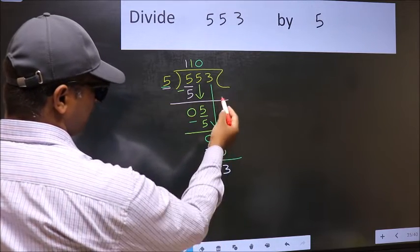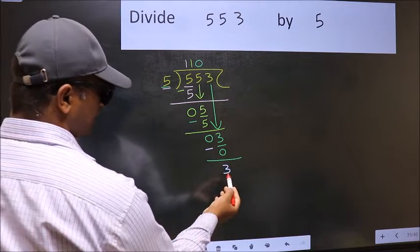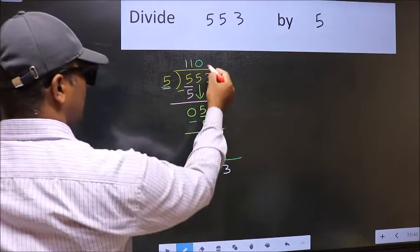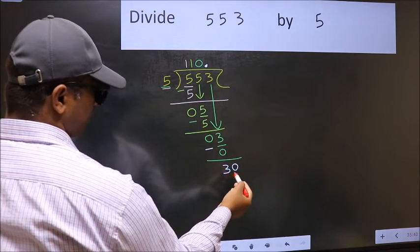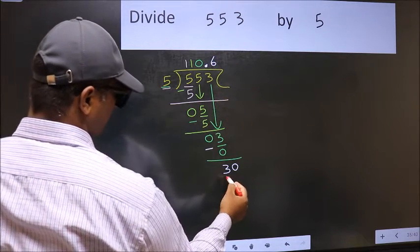Over here we did not bring any number down. So 30. When do we get 30 in 5 table? 5, 6, 30.